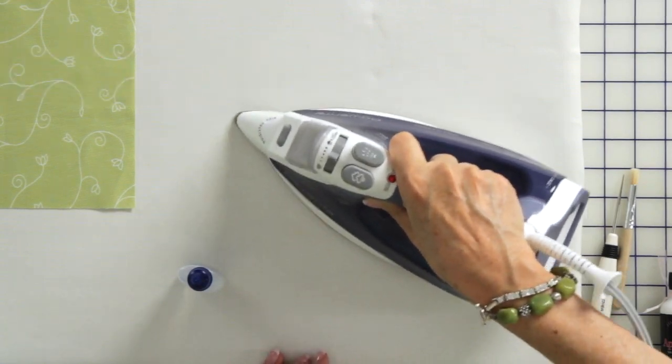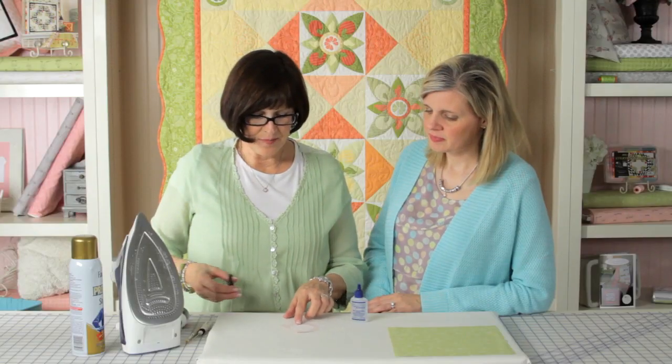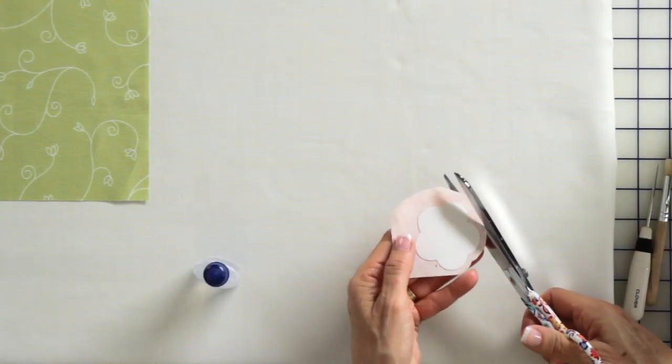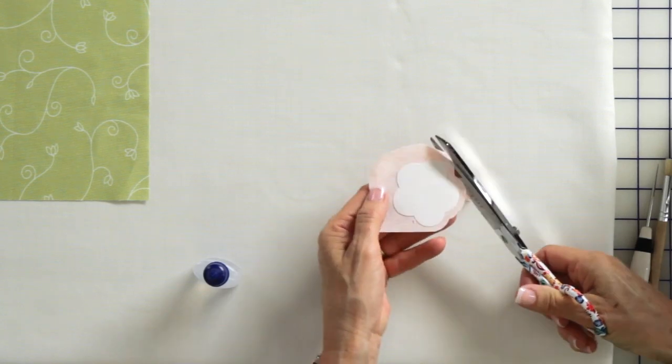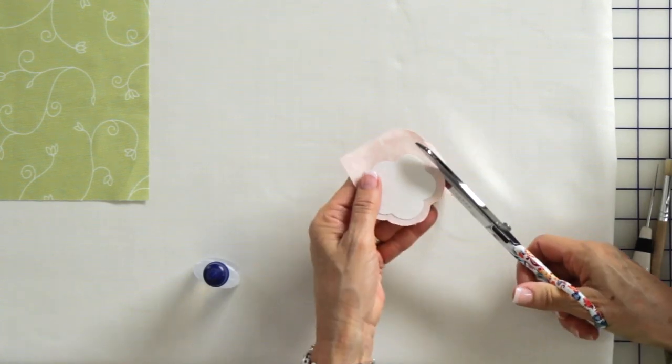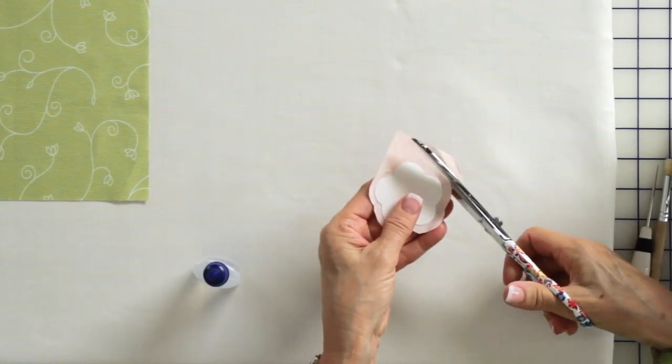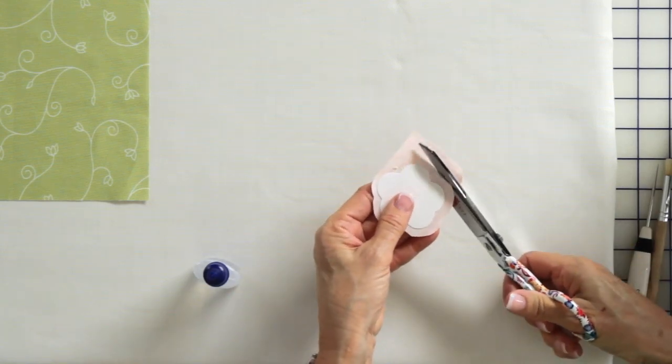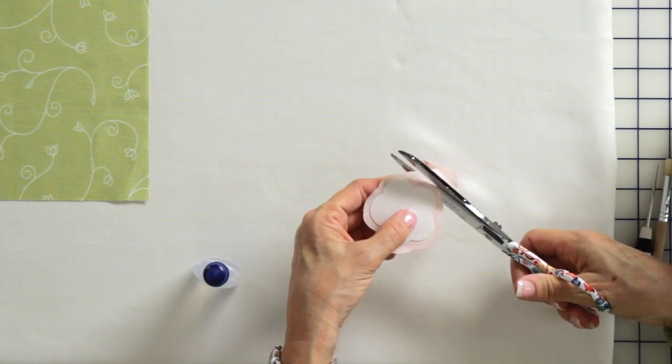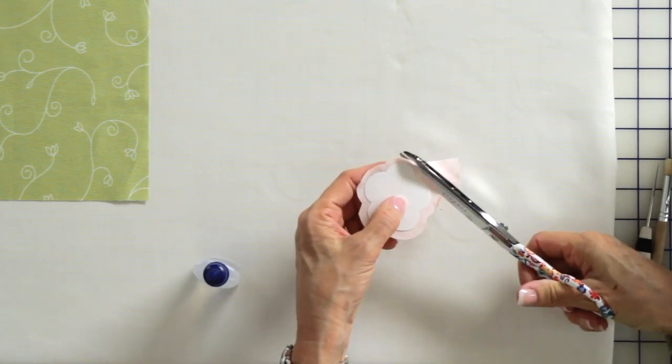I've got my template so I'm going to cut on this shape about a quarter inch away. I'm just eyeballing approximately a quarter inch seam allowance on the outside of this template.